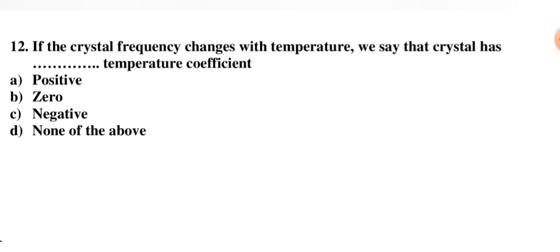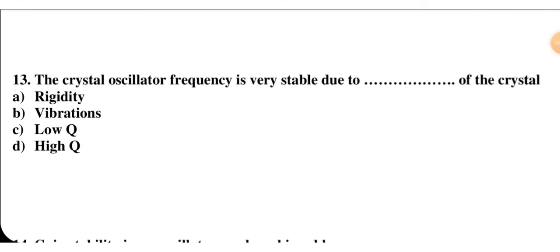If the crystal frequency changes with temperature, we say the crystal has a positive temperature coefficient — so option A is correct. Next: oscillator frequency is very stable due to the high Q (quality factor) of the crystal. Crystal oscillator has a high quality factor Q, so option D — high Q — is the right option.